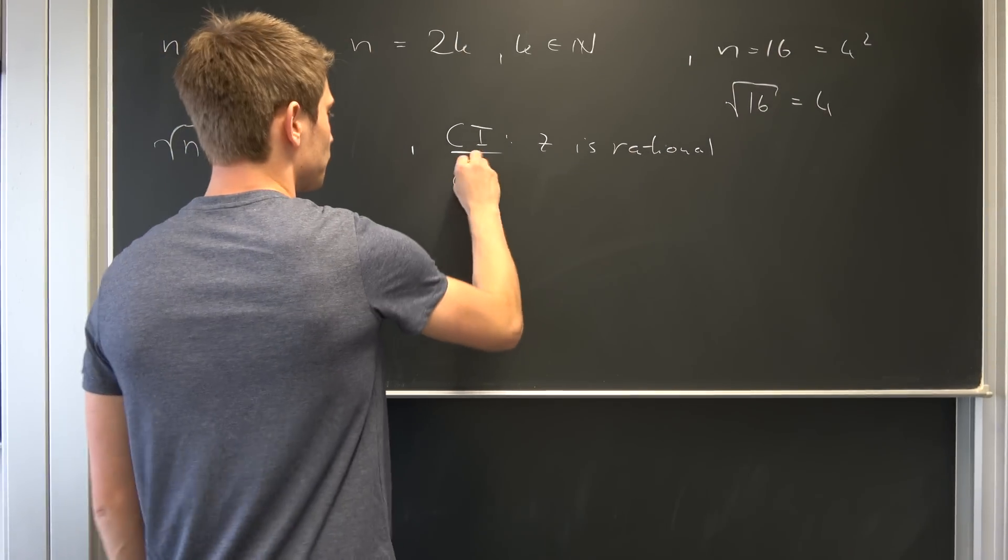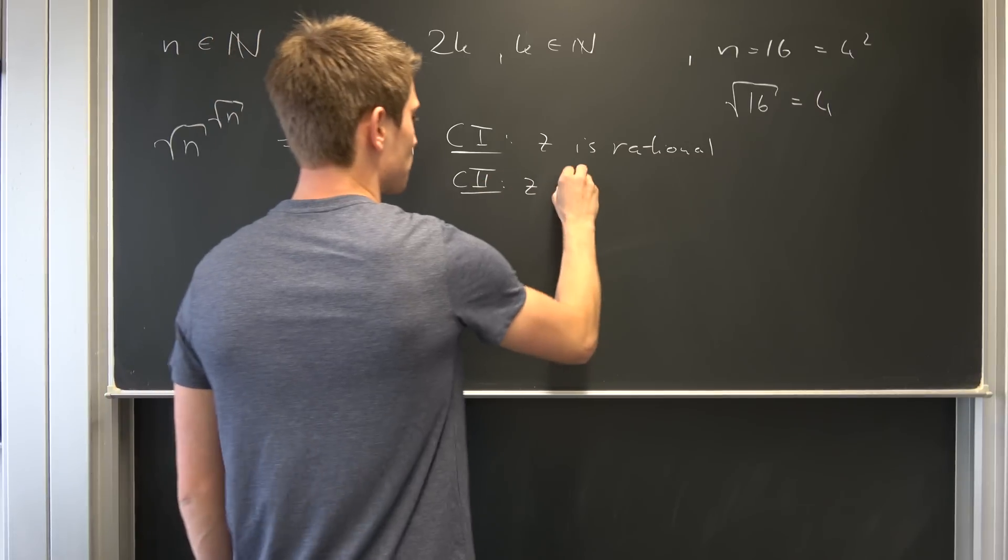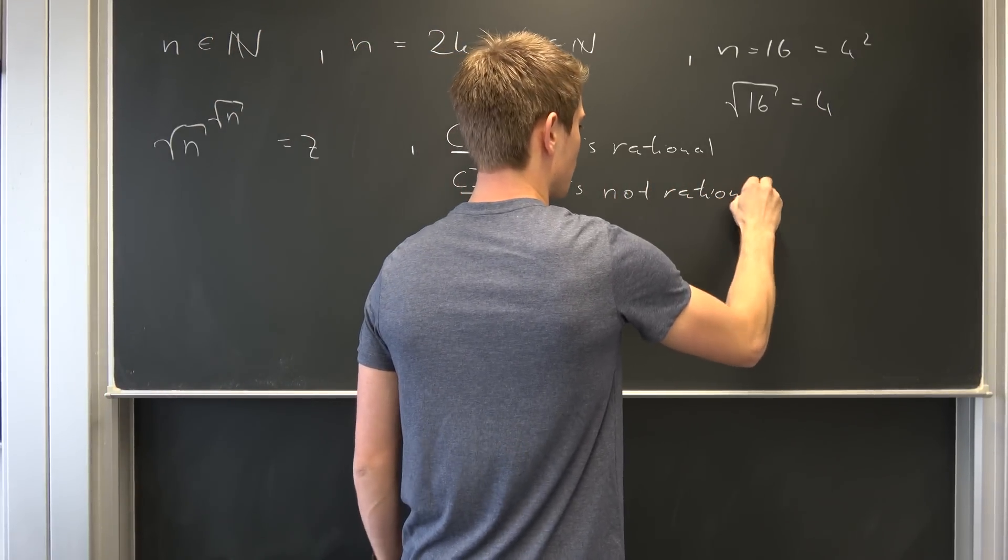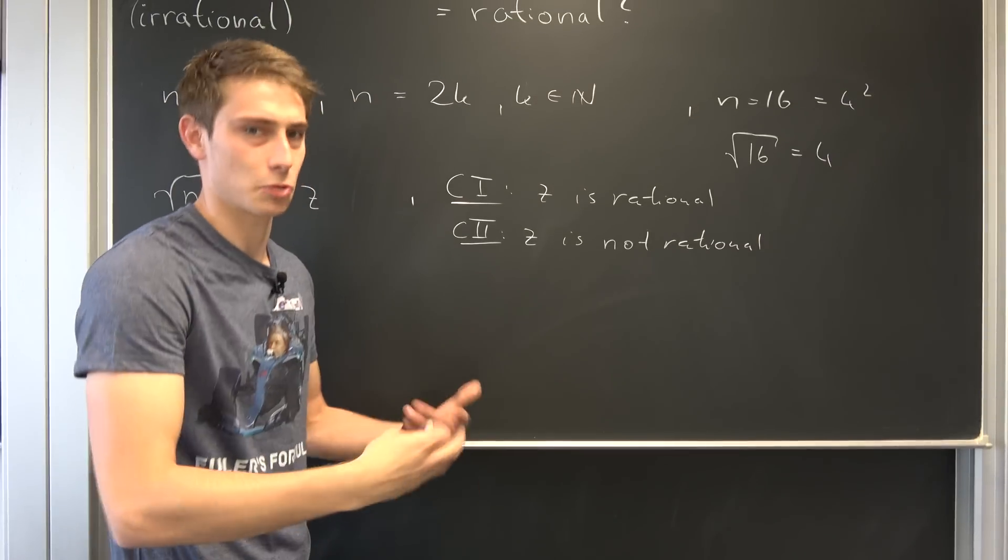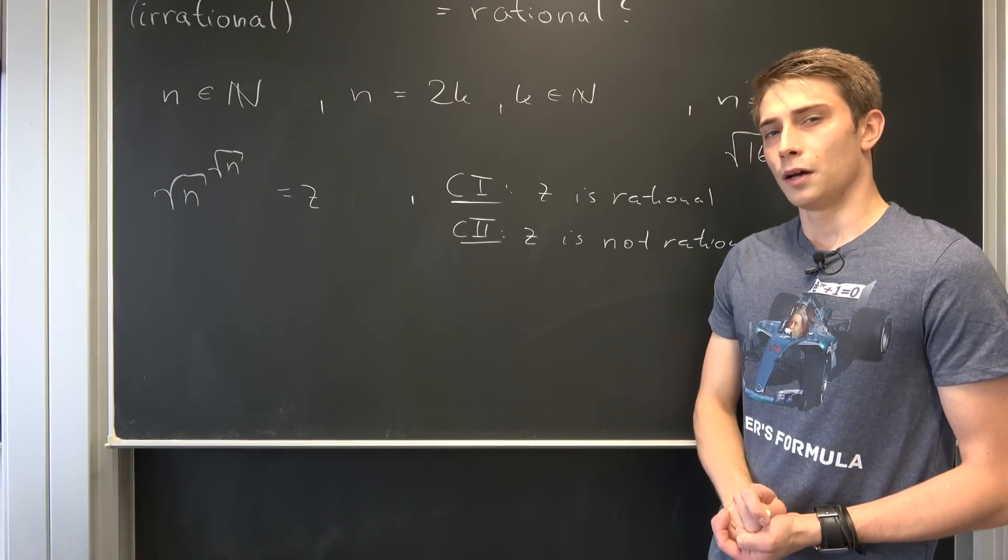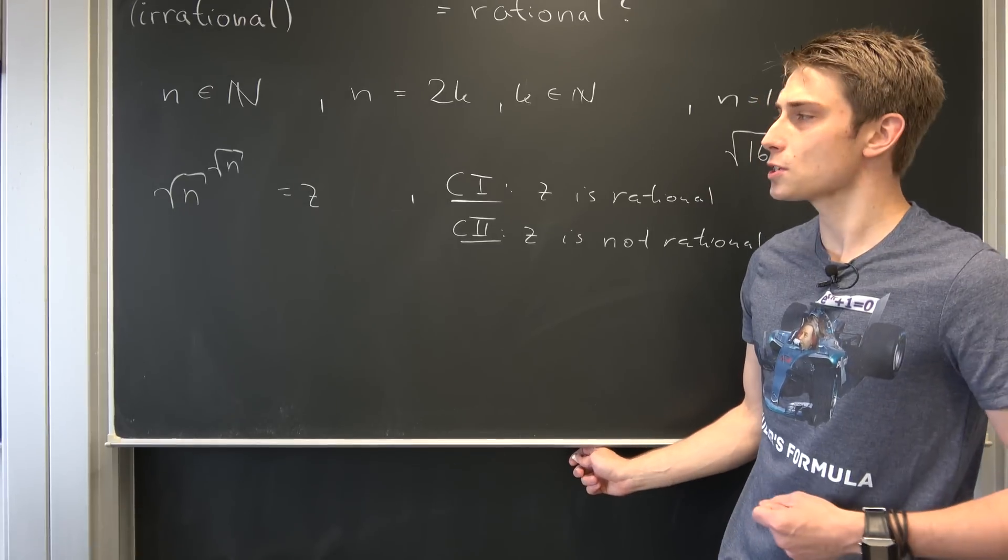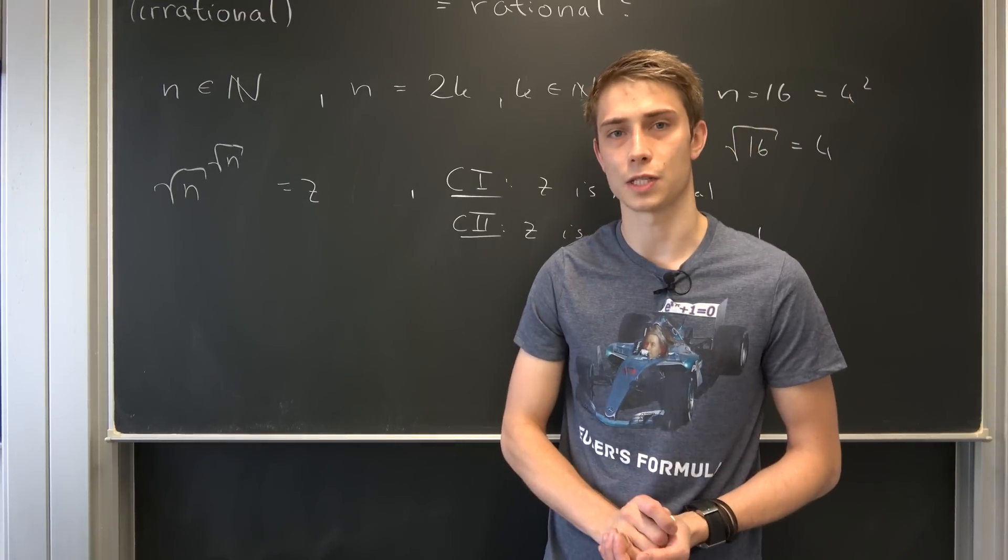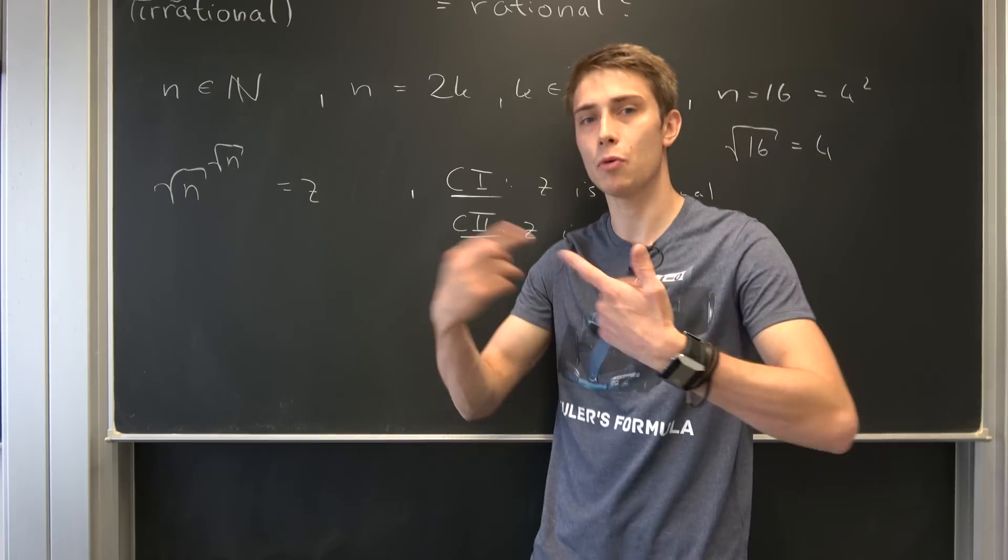Namely, case two: z is not rational. Well, that also means that's equivalent to saying that z is indeed irrational. But that's quite good, because we could raise this z to the power of square root of n once again. That would be irrational to the power of irrational.